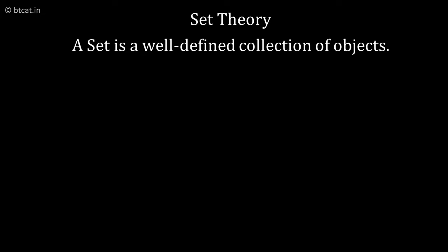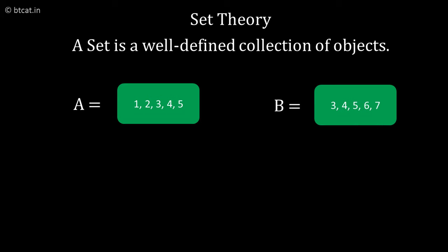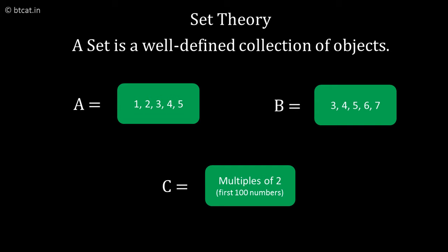I can have a set of 1, 2, 3, 4, 5 as set A. Set B can be 3, 4, 5, 6, 7. Set C can be numbers which are multiples of 2, first 100 multiples of 2 or something like that. Whatever is very well defined, we have a set.